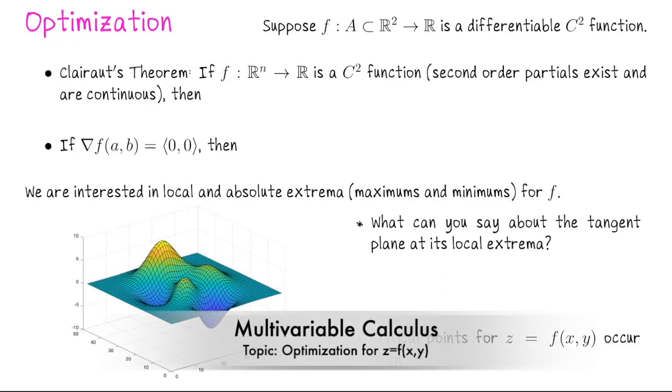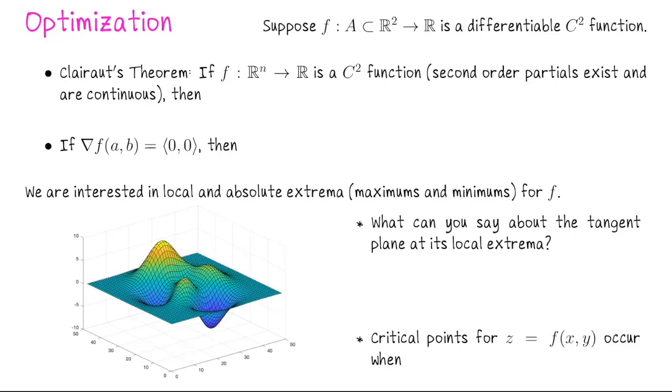In this lecture we're going to start optimization. While this process is valid for a scalar value function of more variables, say a function from R³ to R, I'm going to assume that we're working with a function of the form z equals f of x and y, and we're going to assume our function is a differentiable C² function.